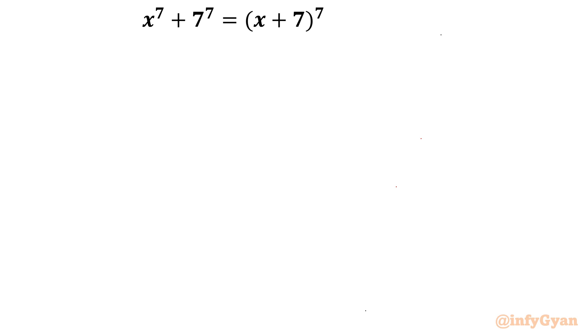Hello everyone, welcome to InfiKyaan in this very exciting video of algebra equation challenge. Today we will be solving x⁷ + 7⁷ = (x + 7)⁷. While solving this problem, I will use Pascal's triangle, algebraic manipulation, and identities to conclude our result. So let's get started by considering Pascal's triangle.